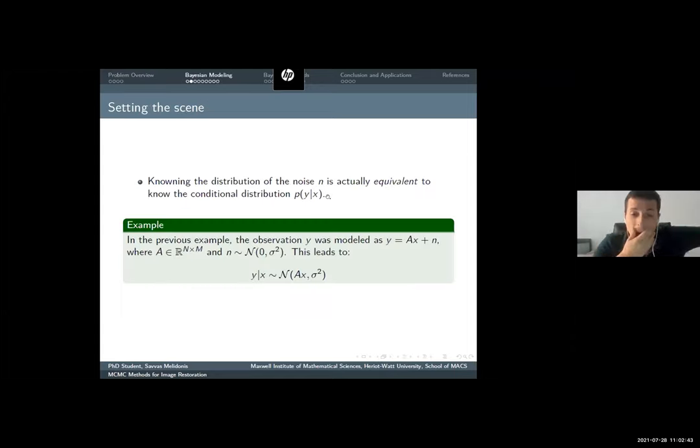Let me start with setting the scene. When we know the distribution of the noise, what we actually know is the conditional distribution of Y given X. In the previous noise image that I showed you, the observation Y was modeled as this equation here. X was the true image, A was a matrix, maybe rank deficient observation matrix.